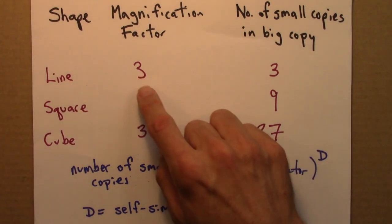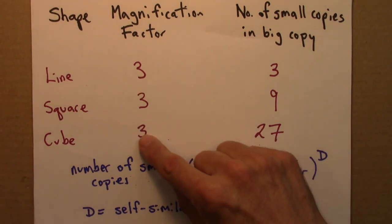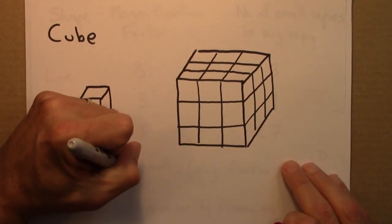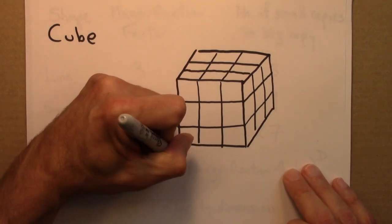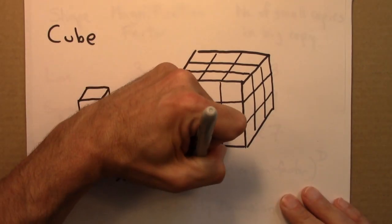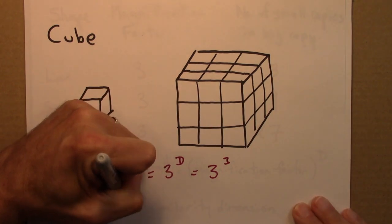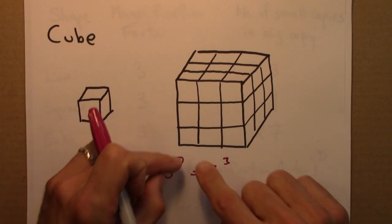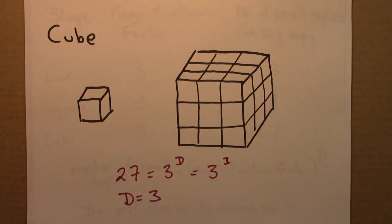We can do a similar thing with a cube. Let's do the cube first. So the magnification factor, sorry, the number of small copies we decided was 27. And that's going to be the magnification factor to the dimension d. And so we see that in this case, d is 3. So the cube is 3 dimensional. And that's consistent with our notion of dimension. 1, 2, 3 directions for a cube. So let's say it's 3 dimensional.